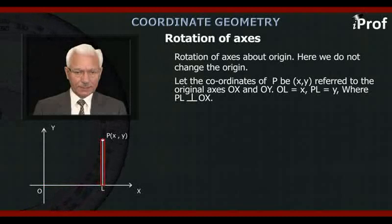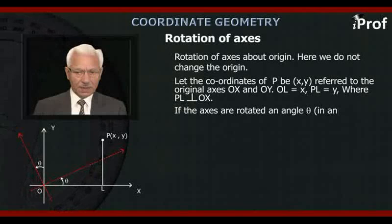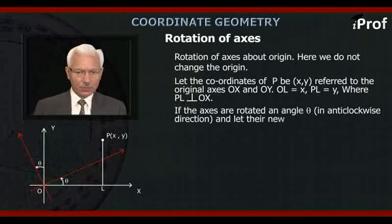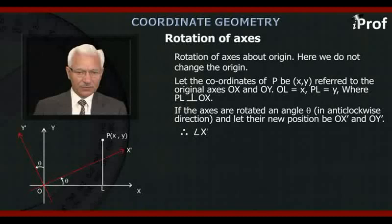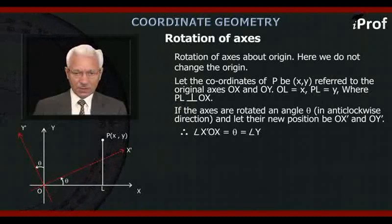If the axes are rotated an angle theta in anti-clockwise direction, and let their new position be OX' and OY', so that angle X'OX is equal to theta is equal to angle Y'OY.